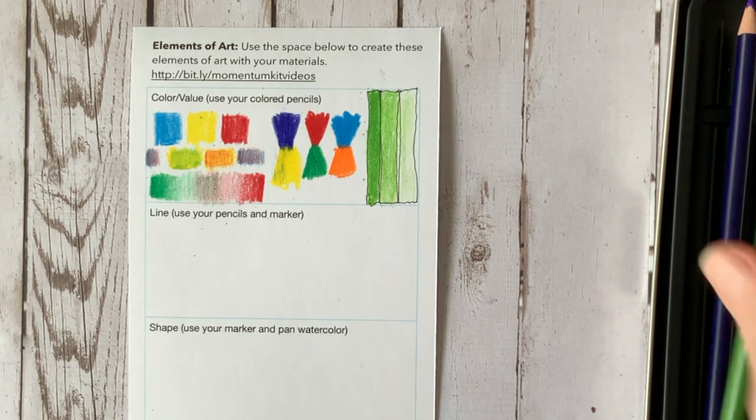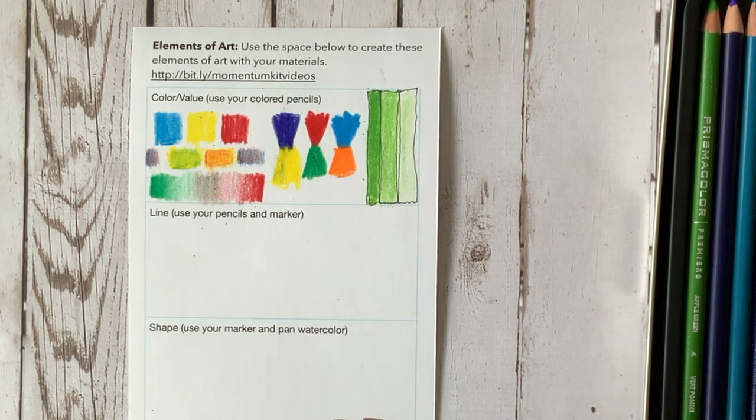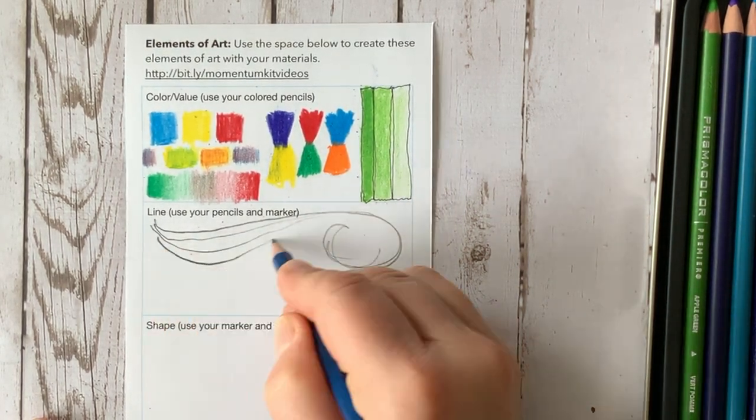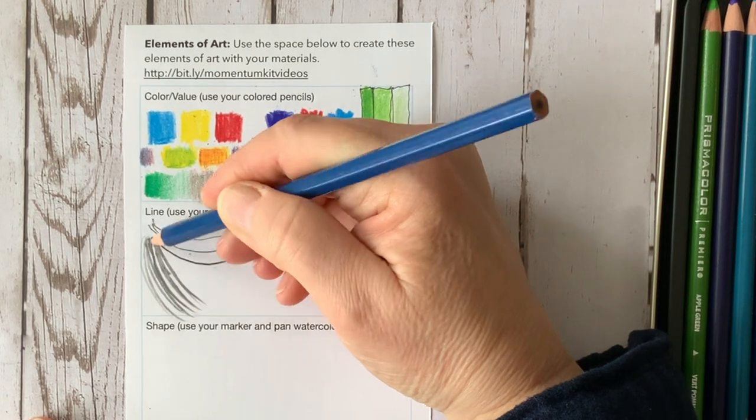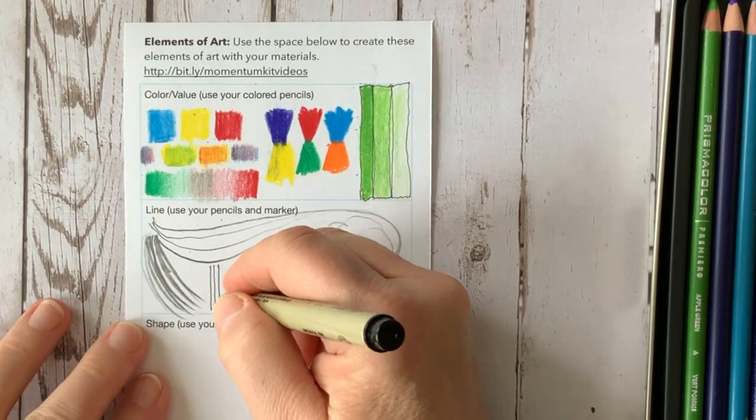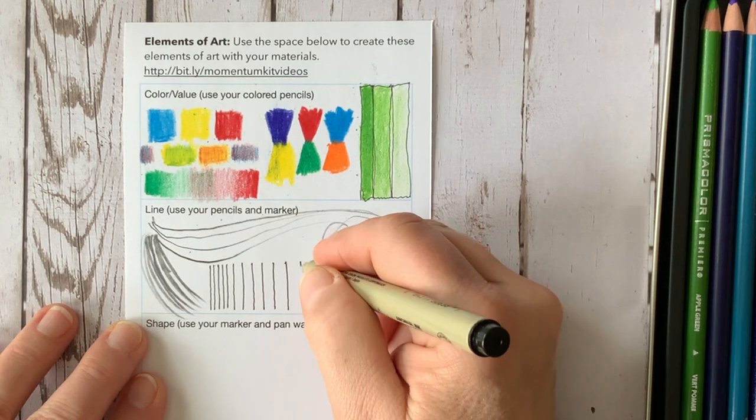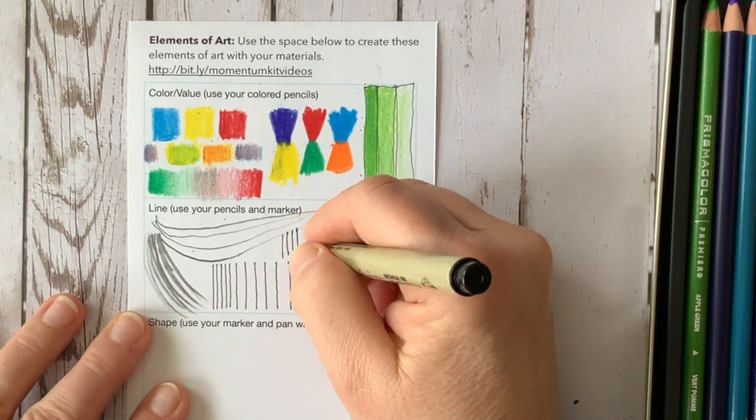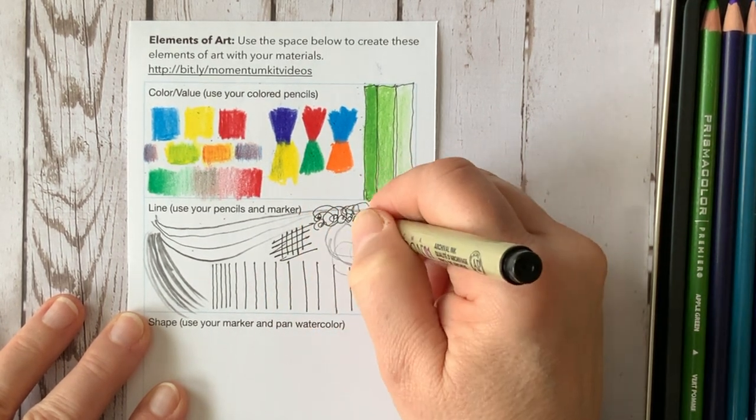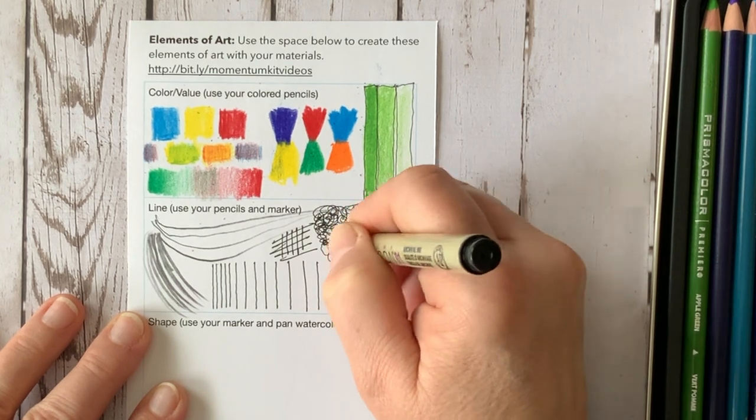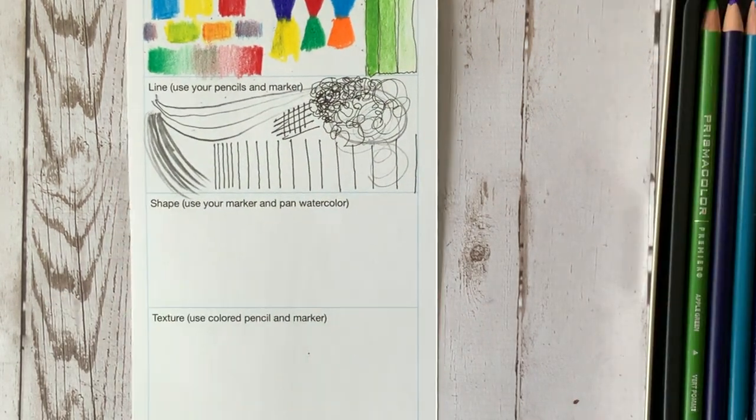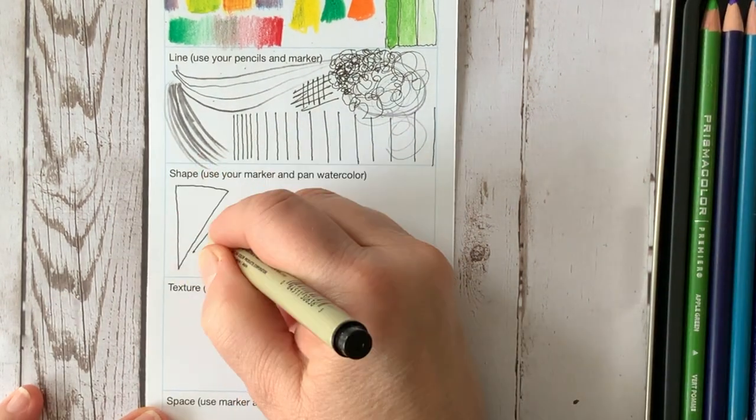Create value scales with your colored pencils. Let's work on some line work with your regular pencils. Probably the HB is the best, and your marker. This is a place where you can develop your ability to do organic lines, straight lines. You can create value, and it's just a great place to play.